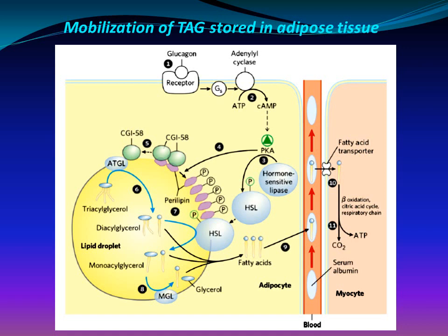CGI-58 then recruits adipose tissue triacylglycerol lipase (ATGL). Active ATGL converts triacylglycerol to diacylglycerols. The phosphorylated perilipin associates with phosphorylated hormone-sensitive lipase, allowing it access to the surface of the lipid droplet. Activated hormone-sensitive lipase converts diacylglycerol to monoacylglycerols. A third lipase, monoacylglycerol lipase, hydrolyzes monoacylglycerol to fatty acid and glycerol.